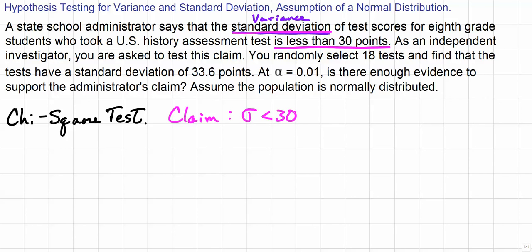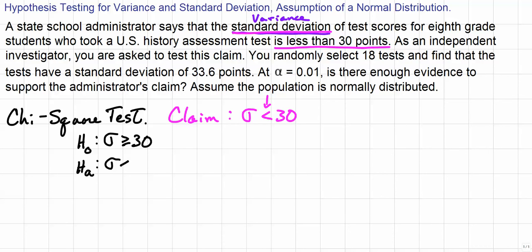Remember that when determining the hypotheses, the null hypothesis must have a statement of equality in it. The alternative hypothesis will be a statement of inequality. Since sigma less than 30 is a statement of inequality, this will be the alternative hypothesis. So the null hypothesis H₀ is sigma greater than or equal to 30, and the alternative hypothesis H₁ is sigma less than 30, which is the claim.